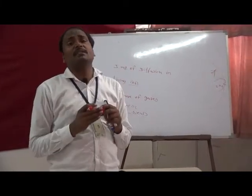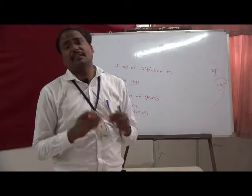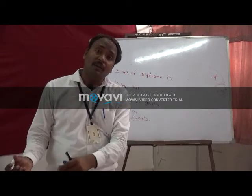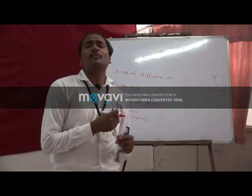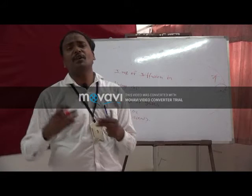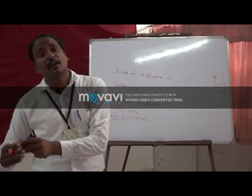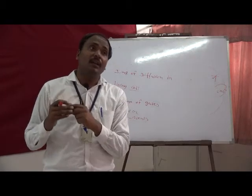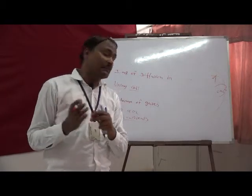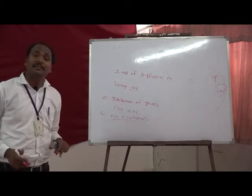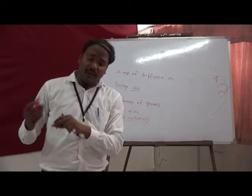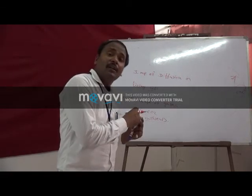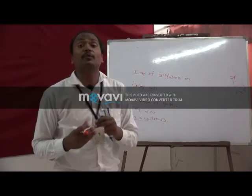When the amount of water in the root hair cell is less than the water available in the soil solution, the water from the interparticular spaces of the soil enters into the root hair cell by the process of diffusion, because the concentration of water in the soil is more than that in the root hair cell.